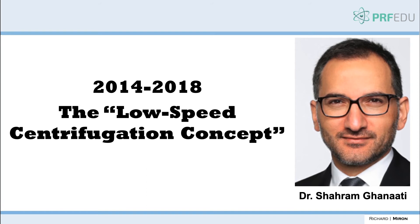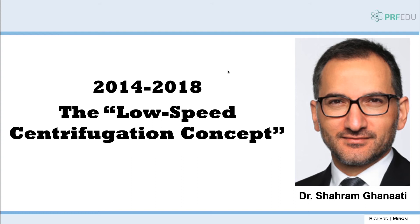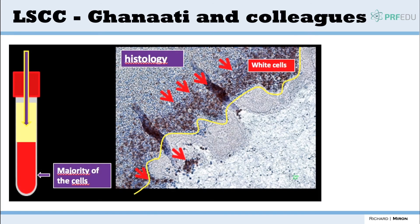After several years of work with the LPRF system, along came Dr. Ghanaati from Germany, and this is where you'll find more about APRF — advanced platelet-rich fibrin. What he found was that when you spin very quickly, all the cells go to the bottom of the tube. Spinning a little bit slower retains more cells in the upper layer. He titled this the low-speed centrifugation concept, which is how APRF came about. Spinning slower for less time also led to liquid formulations of platelet-rich fibrin.